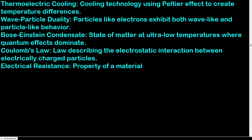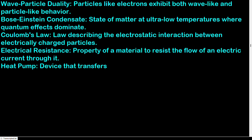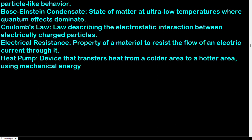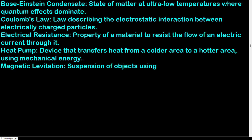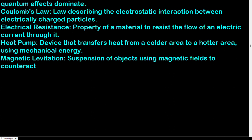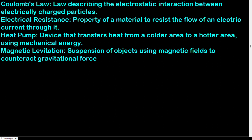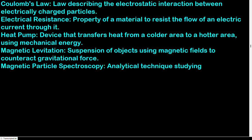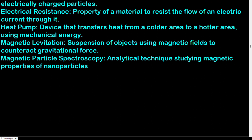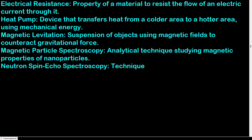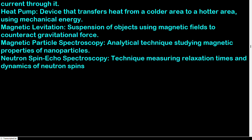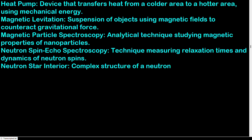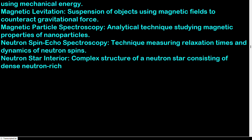Electrical resistance: property of a material to resist the flow of an electric current through it. Heat pump: device that transfers heat from a colder area to a hotter area using mechanical energy. Magnetic levitation: suspension of objects using magnetic fields to counteract gravitational force. Magnetic particle spectroscopy: analytical technique studying magnetic properties of nanoparticles. Neutron spin echo spectroscopy: technique measuring relaxation times and dynamics of neutron spins. Neutron star interior: complex structure of a neutron star consisting of dense neutron-rich matter.